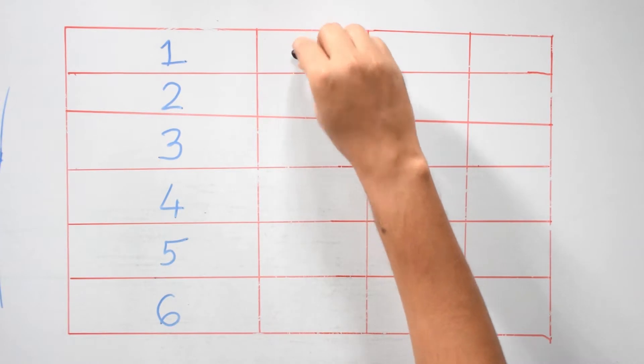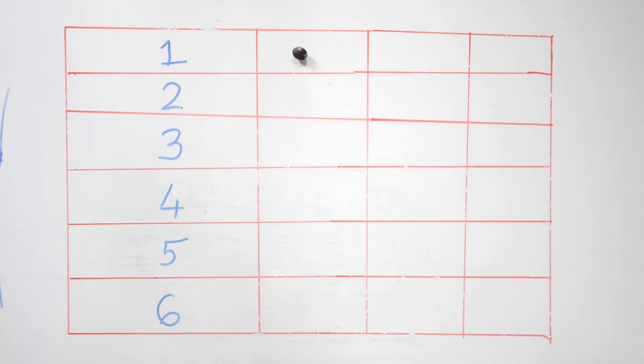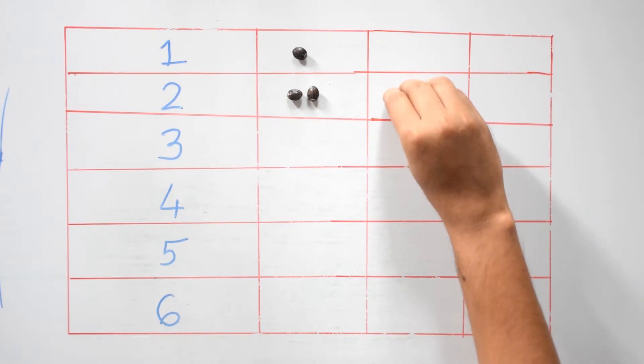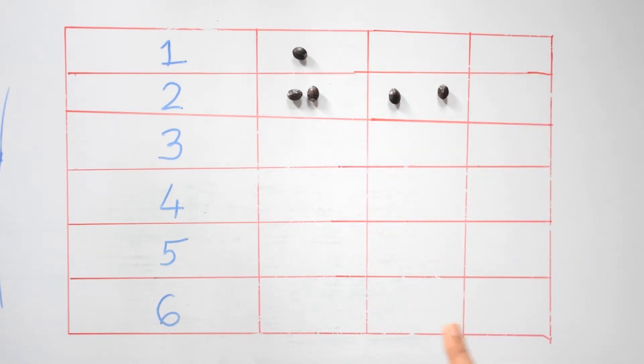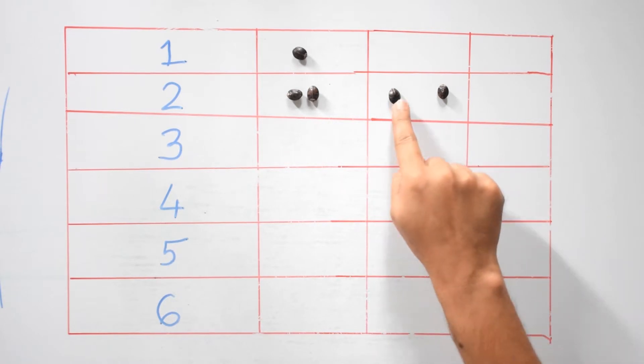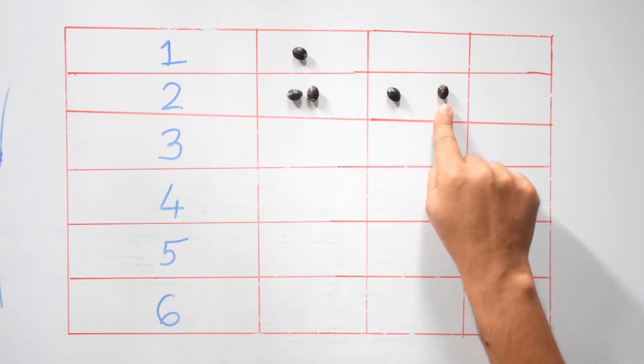For one we can arrange it in only one way. For two we can divide it into two groups, one and two, but the groups have only one seed each so this is not allowed.